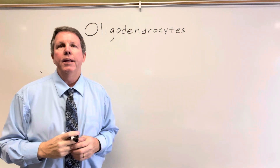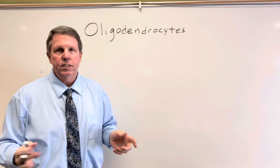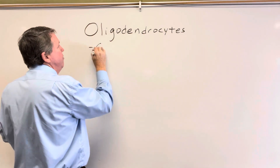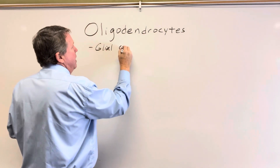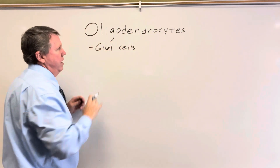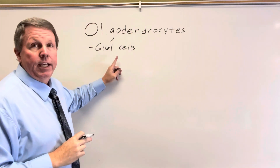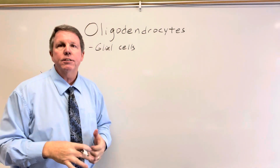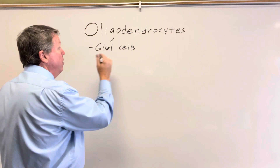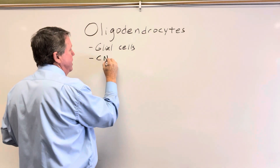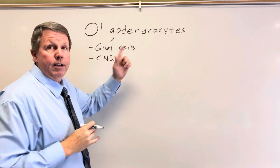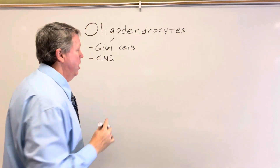Hi everybody. Today we're going to be talking about oligodendrocytes. What are oligodendrocytes? These are glial cells. Like we saw in other videos, glial cells are basically the cells in the nervous system that are not nerves. For the most part, oligodendrocytes are located in the central nervous system. I'm going to do another video on their counterparts, which are called Schwann cells. But what do they do?